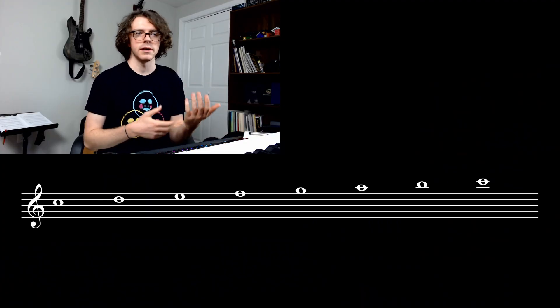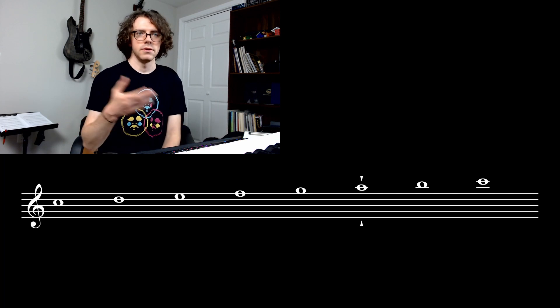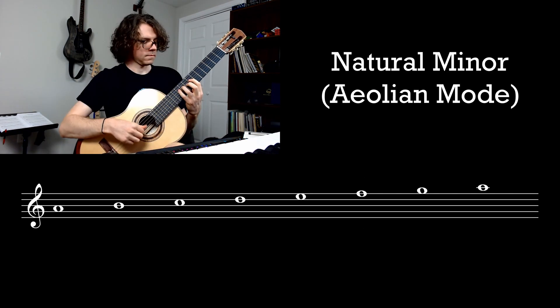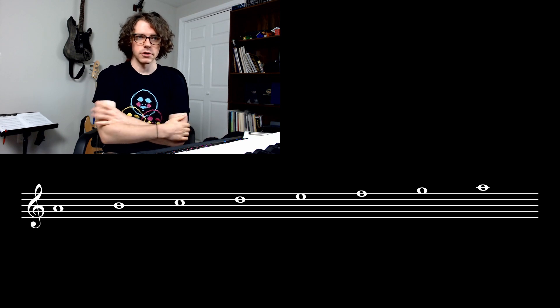First, we'll look at the natural minor scale. When somebody says minor scale, this is usually the one they're referring to. It's called the natural minor because it's a diatonic mode — it's born out of a major scale. If you start and end a major scale on the sixth degree, you get the natural minor scale. It's the same thing as the Aeolian mode. Every major scale has a relative minor scale that can be derived this way. In the case of C major, the relative minor is A minor. So if we're playing a song in the key of A minor, our note and chord choices come from this scale, generally speaking. But there is a glaring problem with this scale.